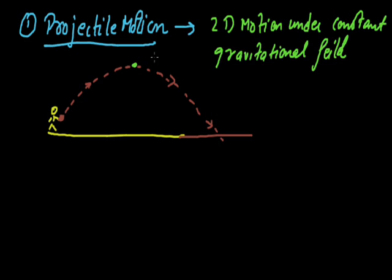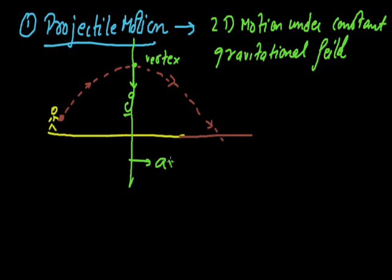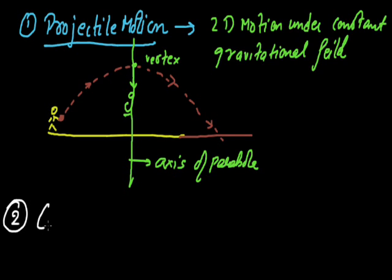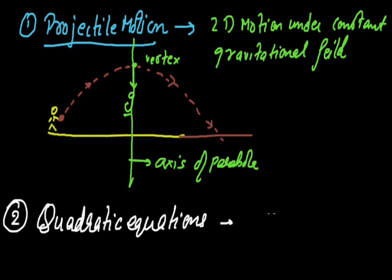The highest point the stone reaches is what we call the vertex, and the direction of gravity G acts downward. One thing to note is that the direction of the constant acceleration — that is G — is parallel to the direction of the axis of the parabola. The next place where we come across parabolas is quadratic equations. We must have all seen the quadratic equation of the form y equals Ax squared plus Bx plus C, where A is not zero.